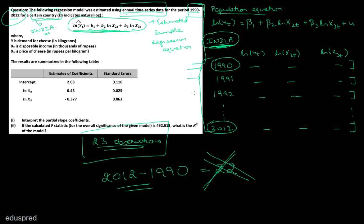Every observation gives you the data corresponding to a particular time period. Also note that when you work with time series data, you put T as the subscript, and when you work with cross-sectional data, you put I as the subscript. We are given the estimates of the coefficients — that is, the values of B1, B2, and B3 — and also their standard errors.